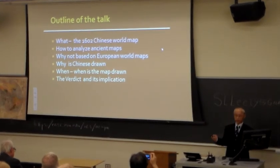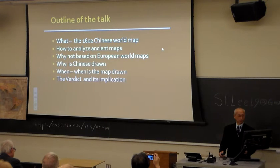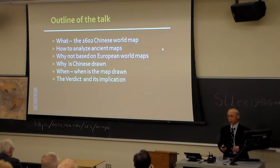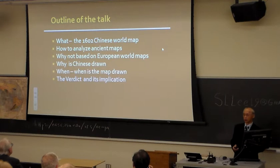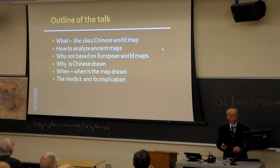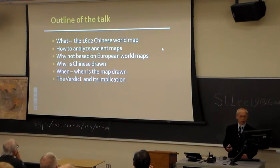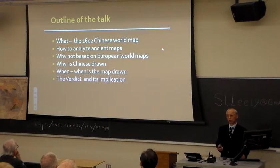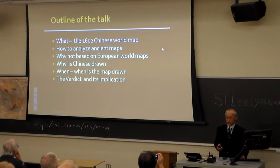The outline of the talk — just like any reporting — I'll tell you what it is. Mostly it's about a map. I call it the 1602 Chinese world map. The official name is very tongue-twisting for non-Chinese speakers, so I'll just call it the 1602 Chinese world map. I'll cover how to analyze ancient maps, why this map is not based on European world maps, why it is drawn by Chinese, where it is drawn, and what the map and its author and era imply to our understanding of history.